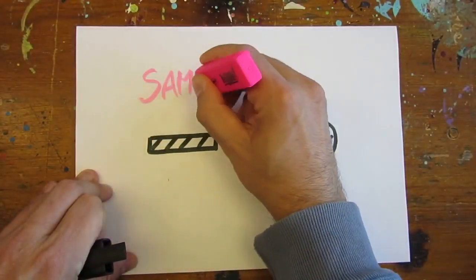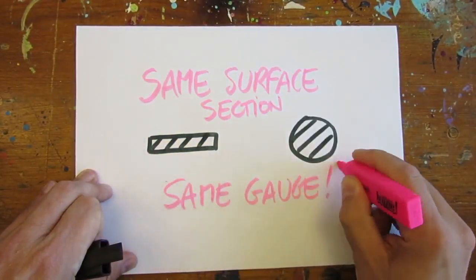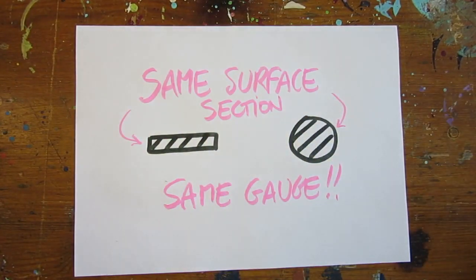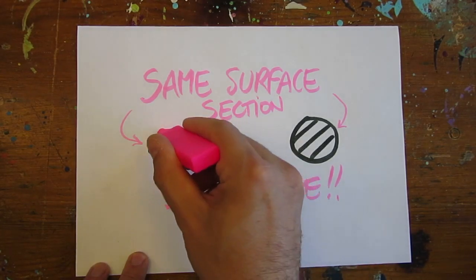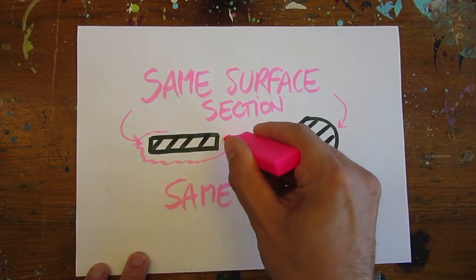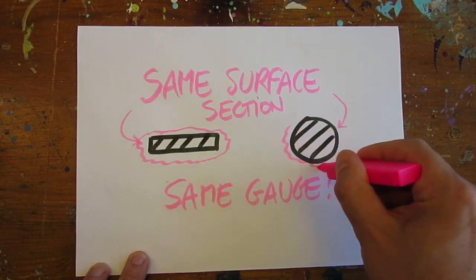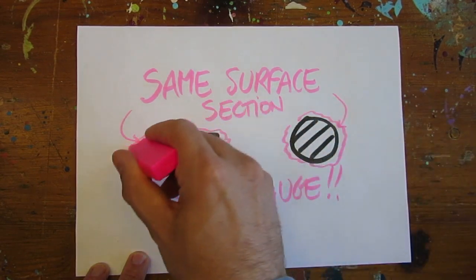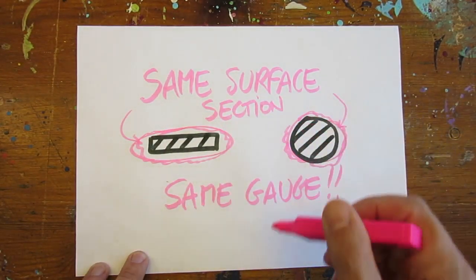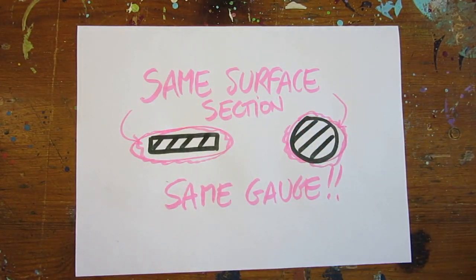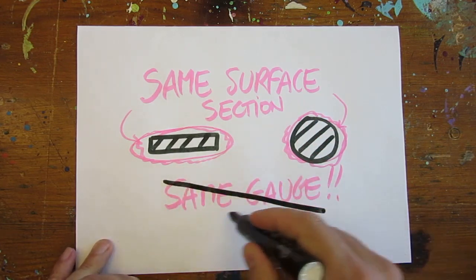While I initially estimated my wire gauge based on its equivalent surface section for a round wire, I see now this was not a smart move. For a same surface section, a ribbon has a thinner core and more outside contact surface than a round wire, meaning they will behave differently transferring energy to the air around them.